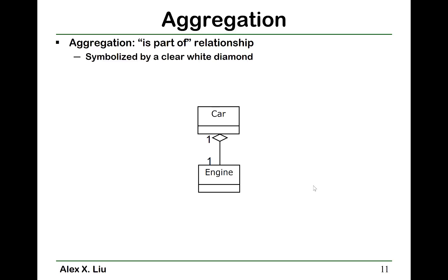Aggregation represents the part-of relationship. To represent aggregation, we put a clear white diamond on the aggregation end. For example, an engine is part of a car. We can also indicate the multiplicity — here, the multiplicities mean that a car can only have one engine, and an engine can only be part of one car.